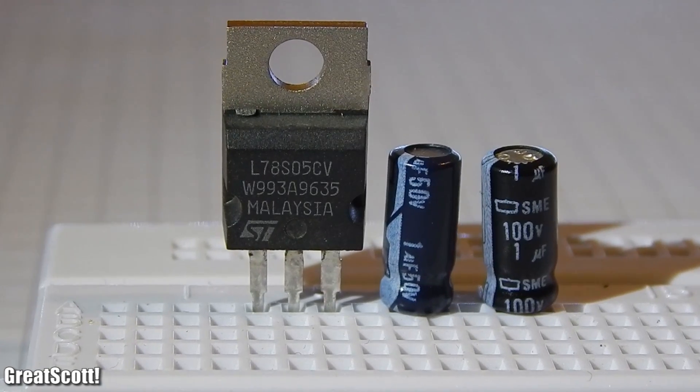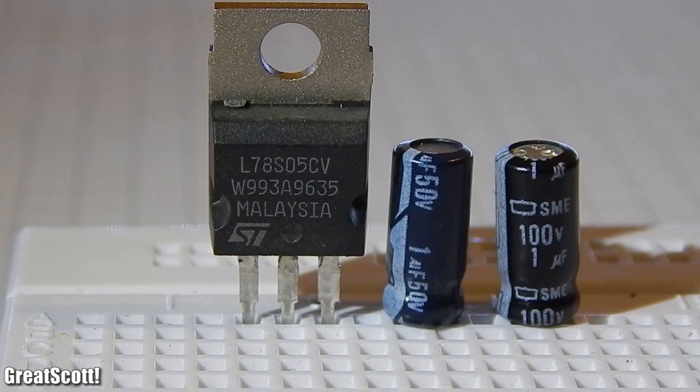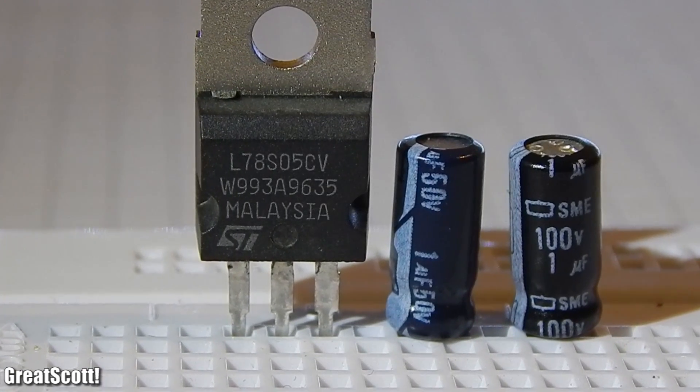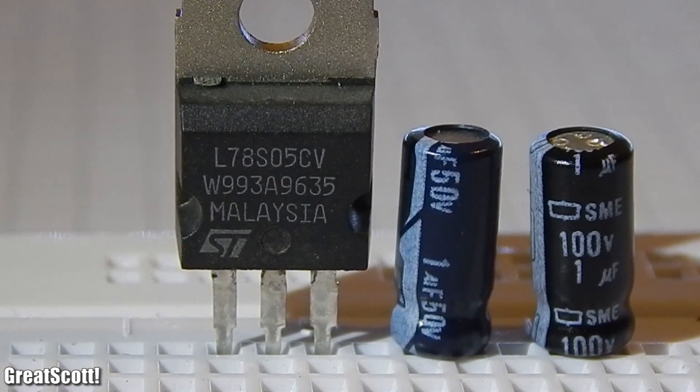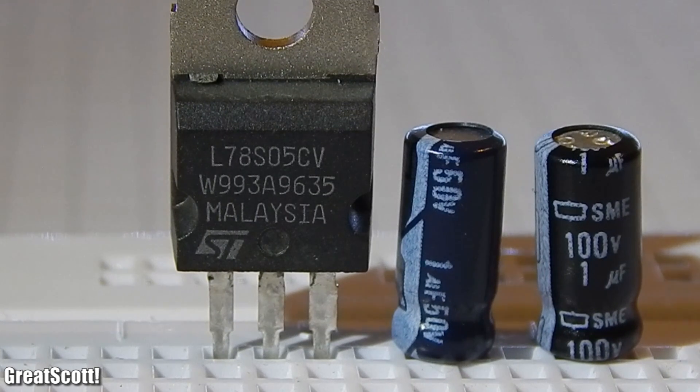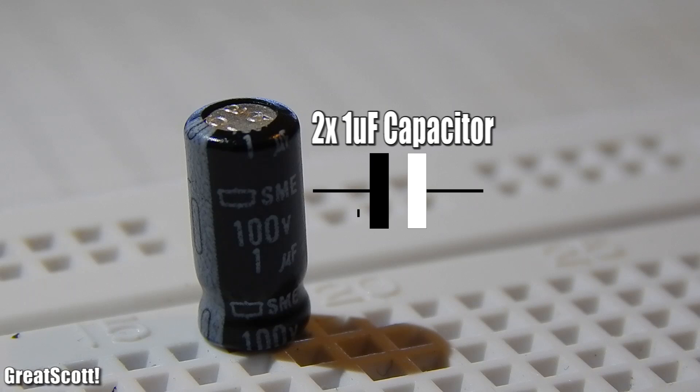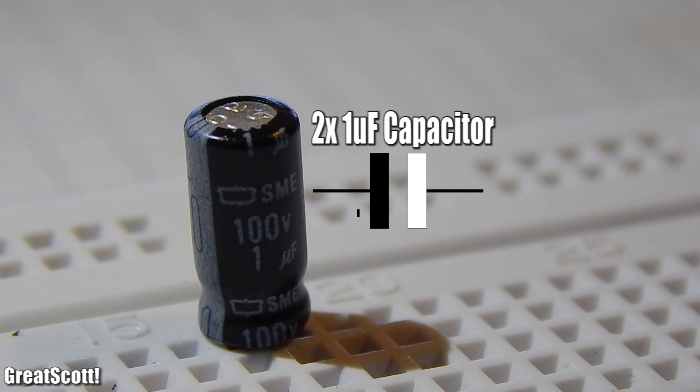The solution for stepping down voltages is a simple and easy to use linear voltage regulator, the LM7805. You can get those for around a buck. The circuit only needs two external components, and those are two 1µF capacitors.